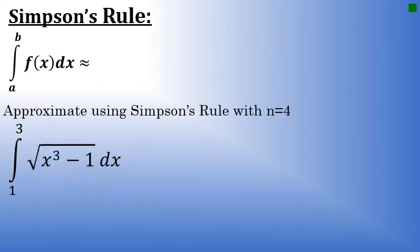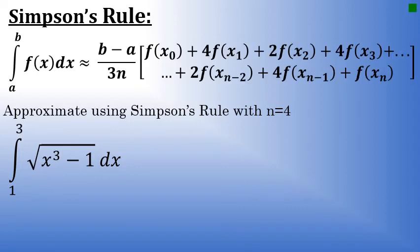Simpson's rule states that the integral from a to b of f of x dx is approximately equal to b minus a over 3n times this big quantity. Now, Simpson's rule is not as hard to apply as it looks. I discuss Simpson's rule in more detail in another video.